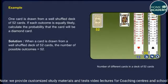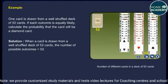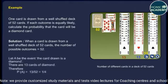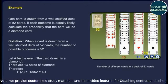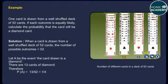Solution. When a card is drawn from a well-shuffled deck of 52 cards, the number of possible outcomes is equal to 52. Let A be the event that the card drawn is a diamond. There are 13 cards of diamond. Therefore, P(A) = 13/52 = 1/4.